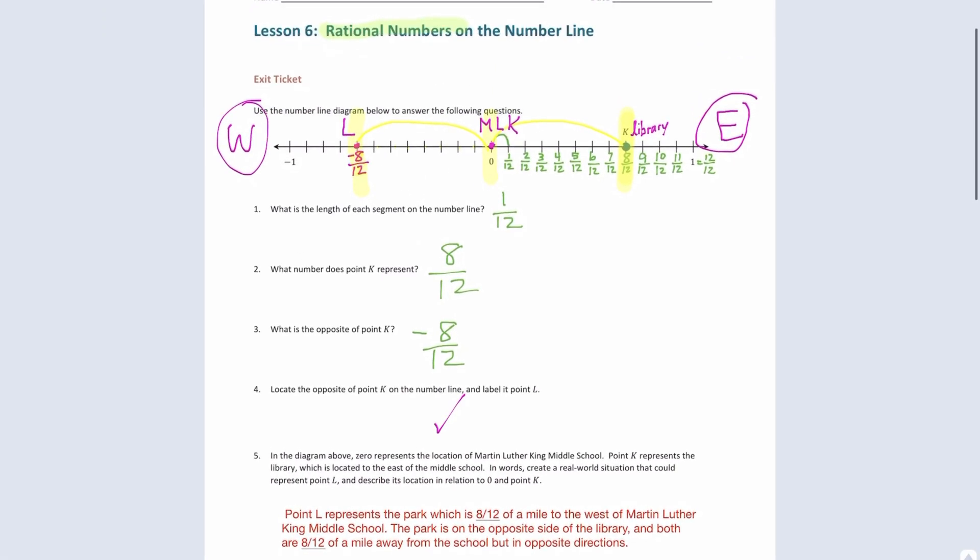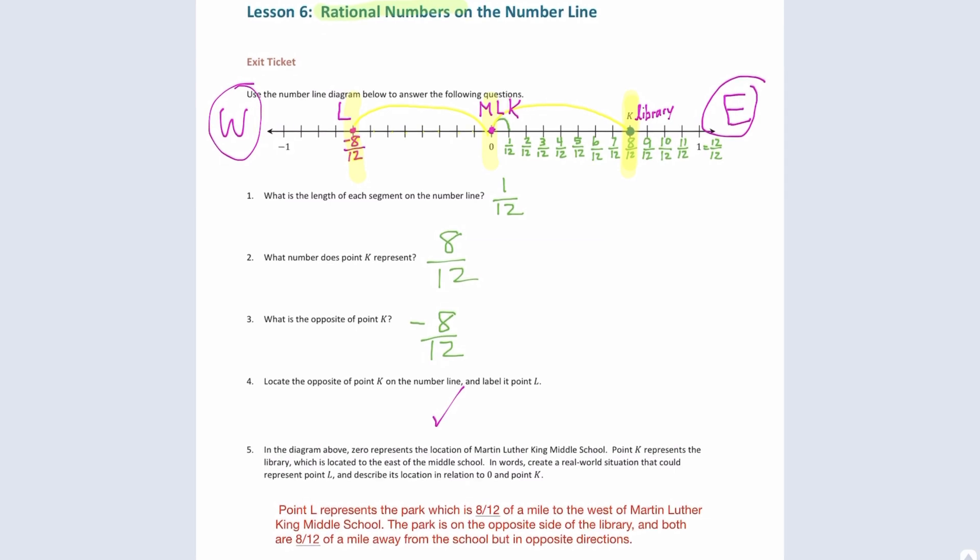All right, here we have our module three, lesson six exit ticket. Once again, the main idea, rational numbers. If you feel like you could graph rational numbers on a number line, in other words, can you graph fractions on a number line? In other situations, can you graph decimals on a number line? If you feel strongly about that, then you've met today's objective. The main idea was to count how many spaces there were between zero and one in order to identify what the interval on the number line was. If you could create a really decent story representing this number line, then you have gone above and beyond. Congratulations.